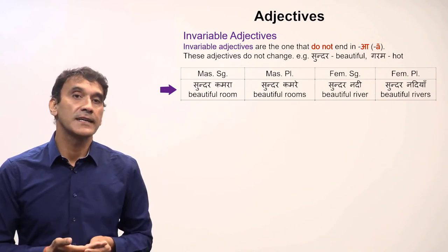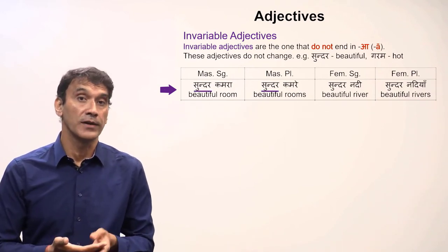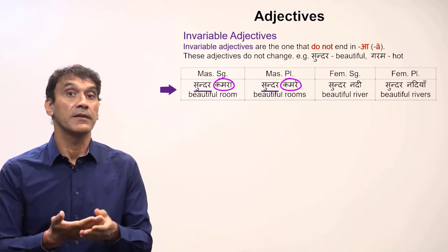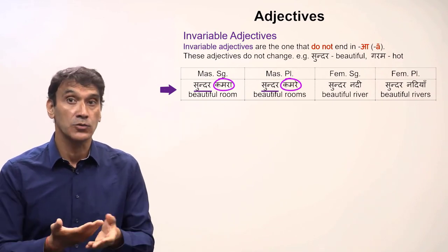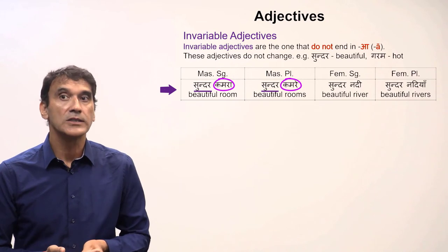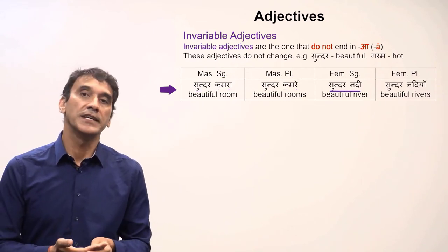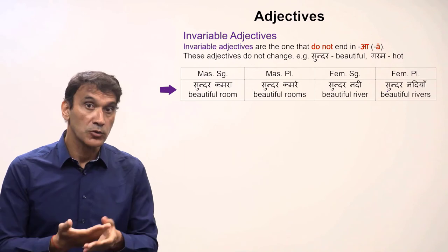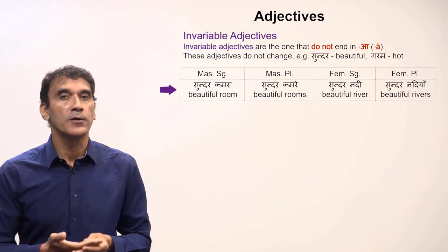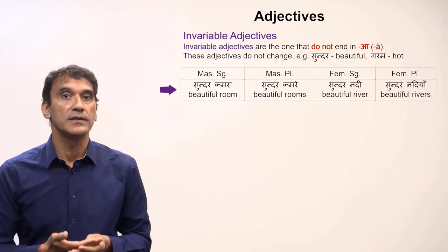Let's take the invariable adjective with nouns: 'sundar kamra' (a beautiful room), 'sundar kamre' (beautiful rooms). You can see the adjective stays the same — 'sundar' — for both singular and plural, but the noun changes from 'kamra' to 'kamre.' Similarly, 'sundar nadi' (a beautiful river) and 'sundar nadiyan' (beautiful rivers). In all four forms, the adjective stays the same: 'sundar.'